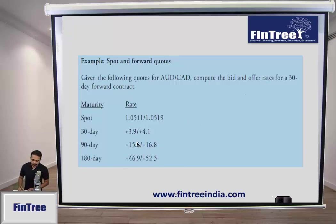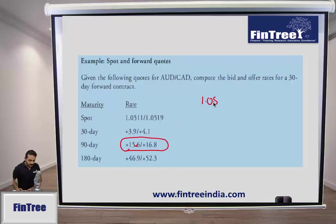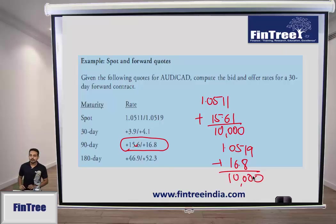For a 90-day forward example: first check if bid is less than ask — yes — so we add the pip points. The forward bid = 1.0511 + 15.61/10,000 and forward ask = 1.0519 + 16.8/10,000. These are your forward quotes. Profit or loss is calculated per apple in the price currency.